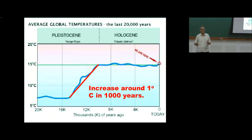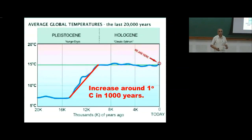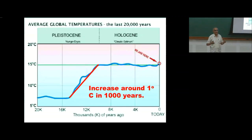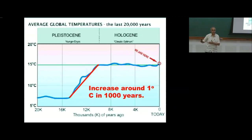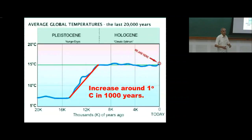We human beings have managed to do much faster. In the last 100 years, temperature has gone up 1 degree. So the present climate change, which is human-induced, is 10 times faster than any events we know in the past. The main point is not that a 5-degree change has not occurred before — it has — but it has occurred much more slowly.